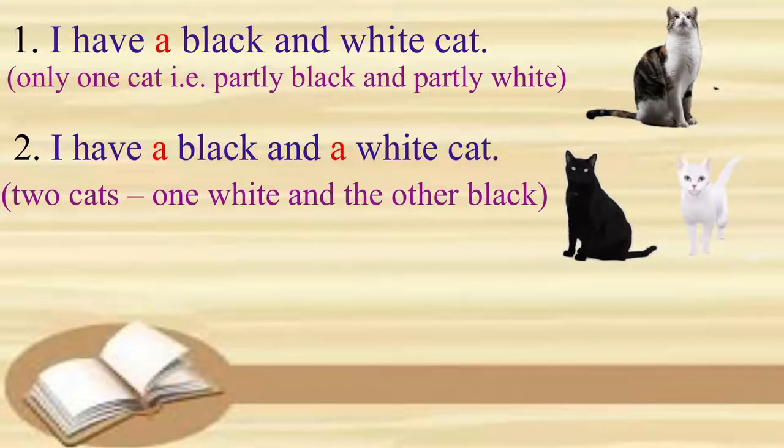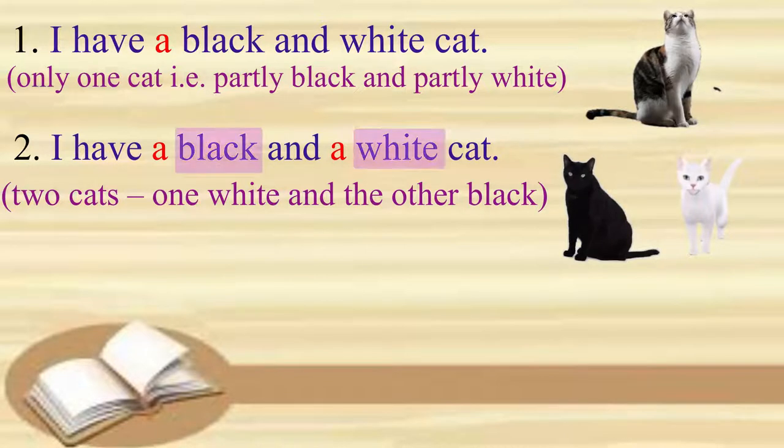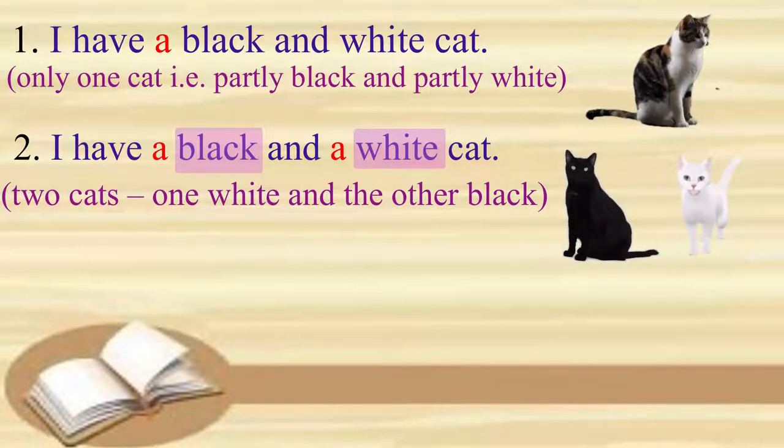Hence, when two or more adjectives refer to the same noun, the article is used before the first adjective only. But when two or more adjectives refer to different nouns, either expressed or understood, the article is used before each adjective.